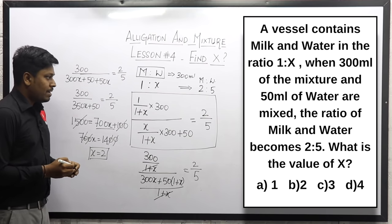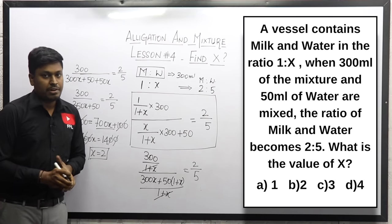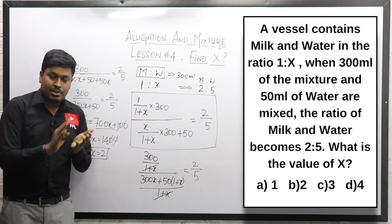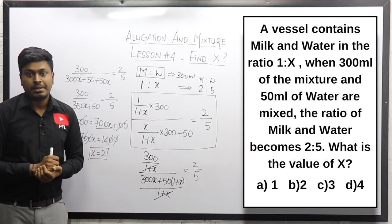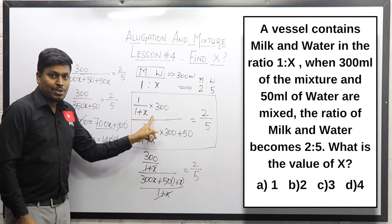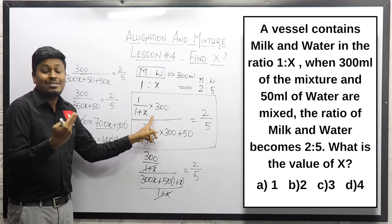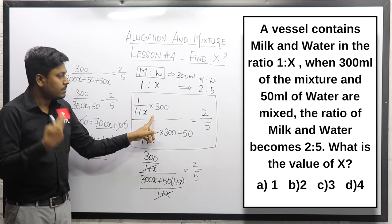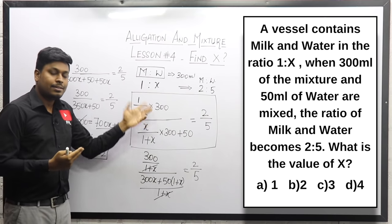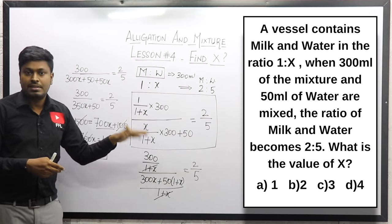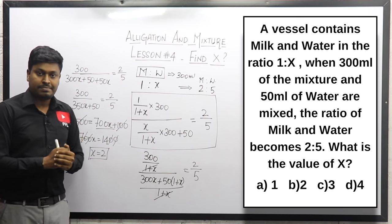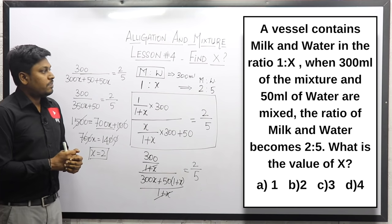The answer for question number 1 is x equal to 2, solved in both shortcut and traditional methods. If you can't understand how I wrote those steps, you may not have watched lesson number 3 properly. Try to learn lesson number 3 first and then come back to lesson number 4.